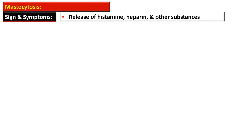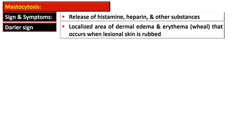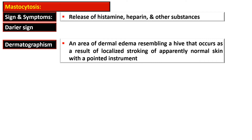The signs and symptoms of mastocytosis are due to release of histamine, heparin, and other pharmacologically active substances released by degranulation of mast cells. The Darier sign is a localized area of dermal edema and erythema or wheal formation that occurs when lesional skin is rubbed. Dermatographism is a term applied to an area of dermal edema resembling a hive that occurs after localized stroking of apparently normal skin with a pointed instrument.